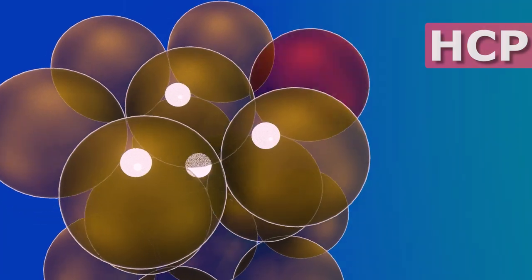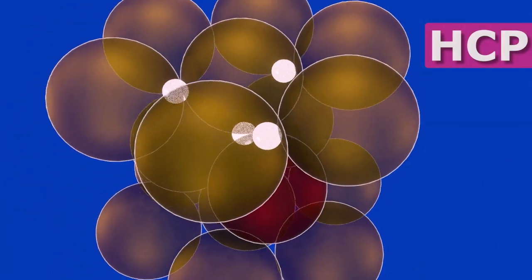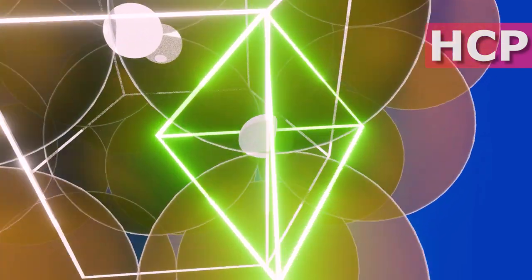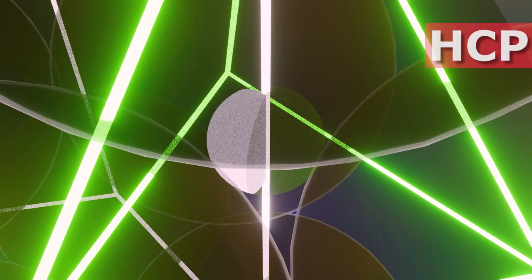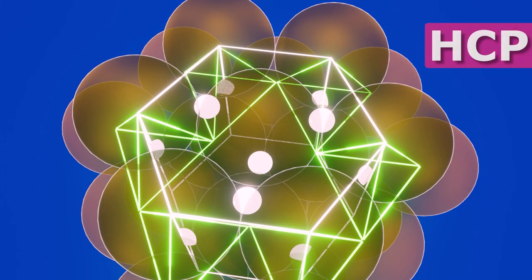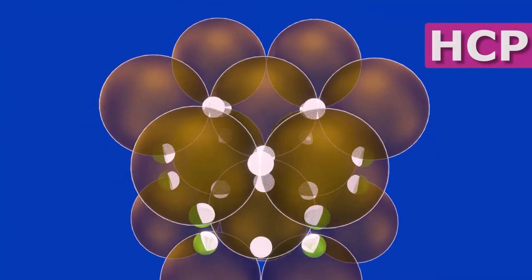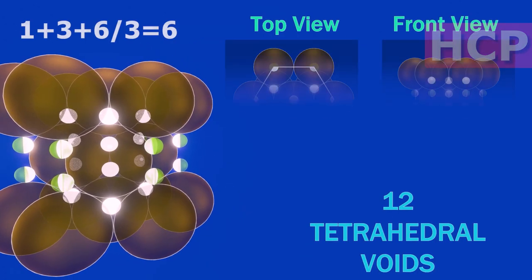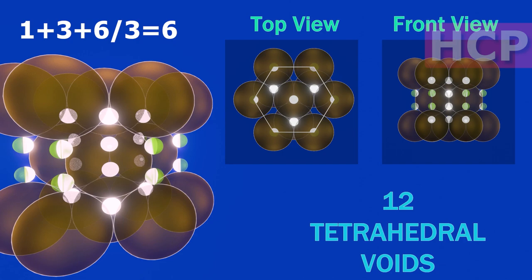One atom from top, one from middle, along with two middle layer atoms of another cell makes another tetrahedral void with one-third contribution to the cell. Six such voids exist. Symmetrically, the same voids exist between the middle and bottom layers, thus accounting to 6 plus 6, 12 tetrahedral voids in HCP.